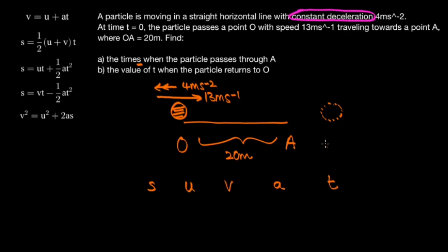And if we look back to the question, notice how there are three pieces of information that we're told. The first is that the deceleration is 4 meters per second squared. We're also told that the initial speed, or the speed at time t equals 0 is 13 meters per second. And finally we're told that the distance between O and A is 20 meters.